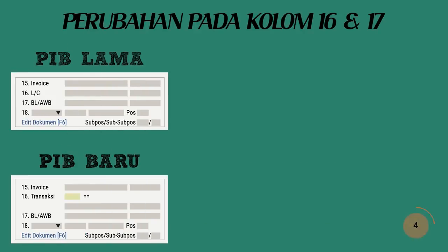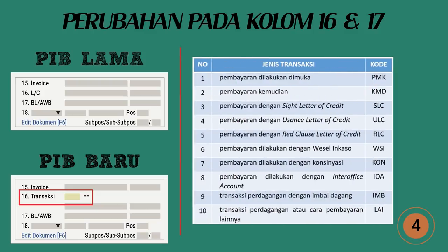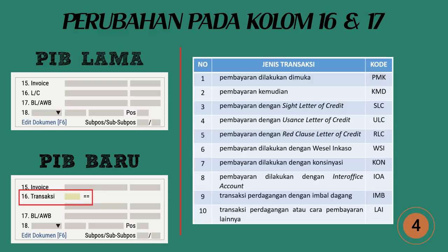Perubahan pada kolom 16 dan 17: Kolom 16 transaksi perdagangan diisi pada kolom yang disediakan dengan nomor, tanggal, bulan, dan tahun dokumen yang digunakan dalam transaksi perdagangan barang impor. Jenis transaksi disampaikan dengan menggunakan kode transaksi yang disediakan. Dalam hal transaksi menggunakan lebih dari satu metode perdagangan atau cara pembayaran, kolom diisi dengan transaksi perdagangan atau cara pembayaran lainnya.